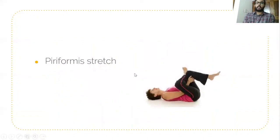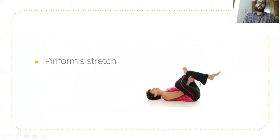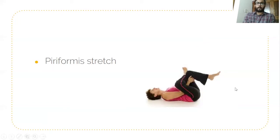In the piriformis stretch test, one hip is flexed and the foot is placed over the quadriceps of the flexed hip, then the patient is asked to flex the hip further. For example, to check the right piriformis: flex the left hip, place the right foot over the left quadriceps, and using the hand, further flex the left hip. This checks the right piriformis muscle.